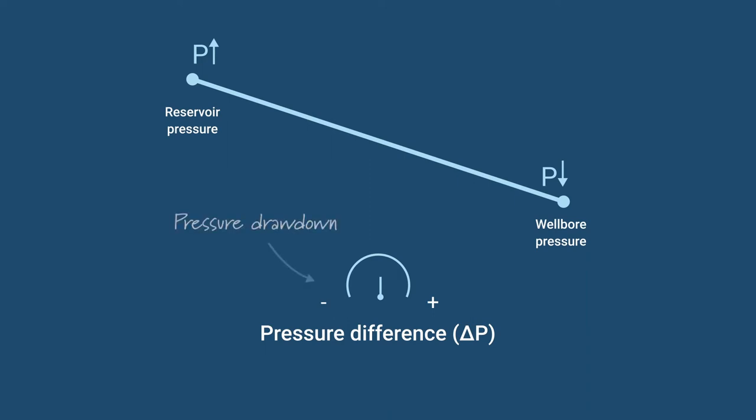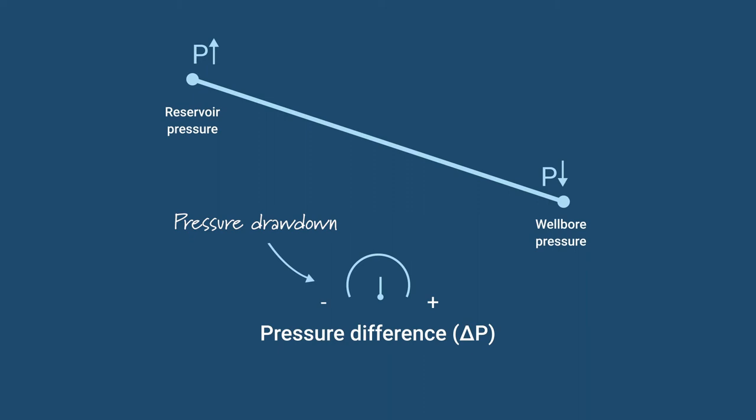This difference is called the pressure drawdown and it's controlled at the surface with a choke. By increasing or reducing the choke size, you are in effect increasing or reducing the total inflow of fluid into the wellbore.